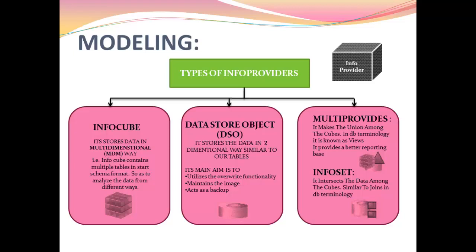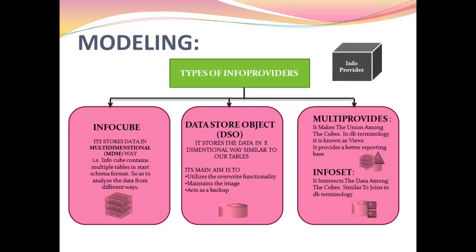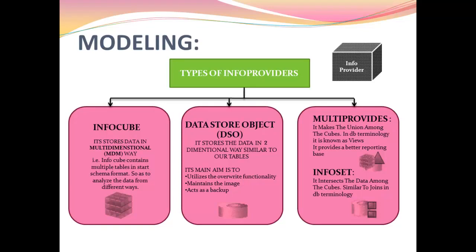Multi-provider and info set. Multi-provider makes the union among the cube, DSO, and info object. Whenever we execute a query on a multi-provider, at runtime it fetches the data from the info provider — in DB terminology it is known as views. It provides a better reporting base. Info set also does not store data; it fetches data from info providers similar to multi-provider, but the difference is it takes the intersection among the data in the info provider — similar to joins in DB terminology.